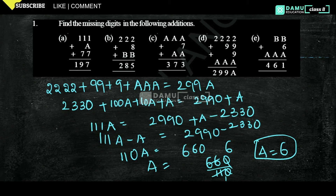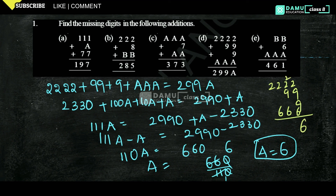Verification: 2222 plus 99 plus 9 plus 666. Adding the ones: 9 plus 9 gives 18; 18 plus 8 gives 26, carry 2. Then 2 plus 4 plus 6 gives 19, carry 1. Then 6 plus 9 gives carry forward. And 2 remains as is. This confirms A equals 6.